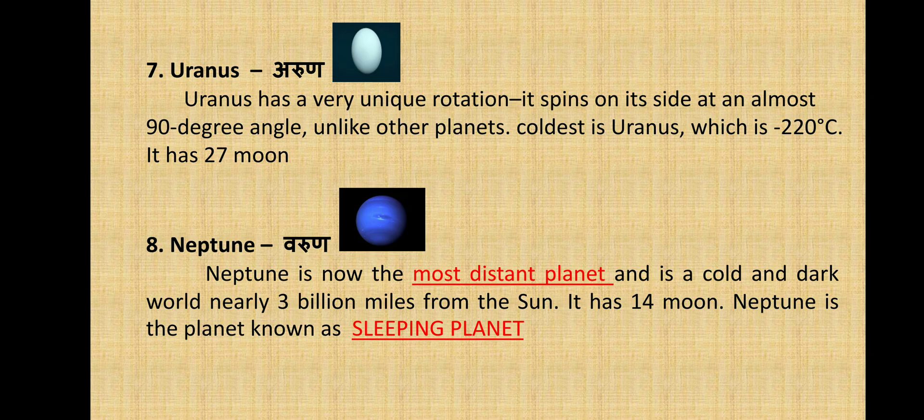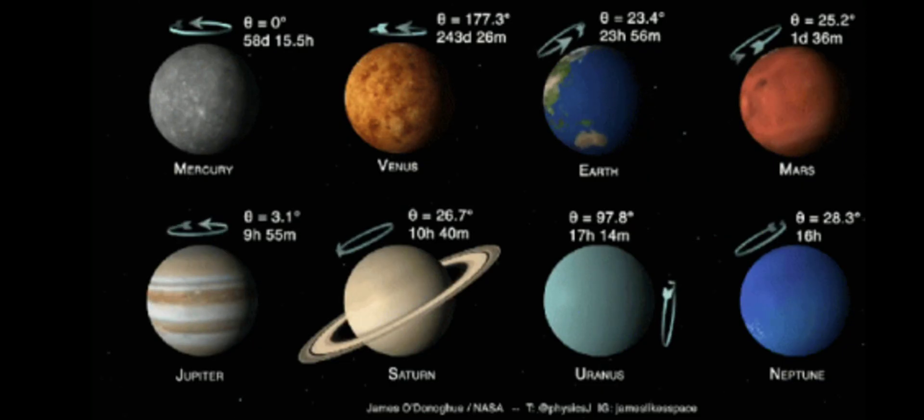The last planet is Neptune, also known as Varun. Neptune is now the most distant planet and is a cold, dark world nearly three billion miles from the sun. It has 14 moons. Neptune is also known as the sleeping planet because it is a very dark world.